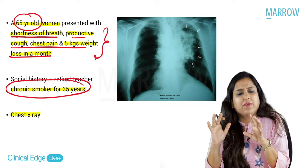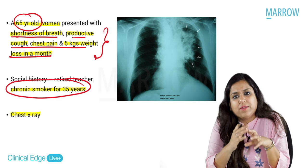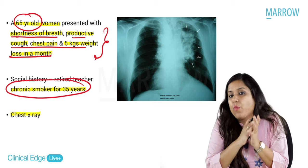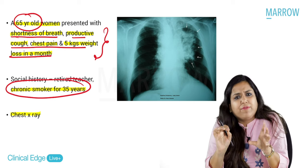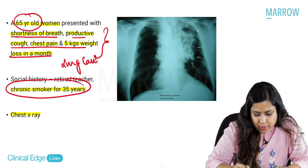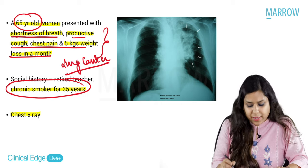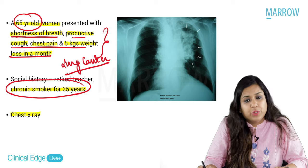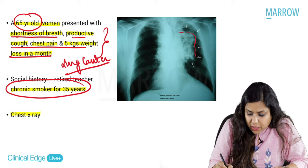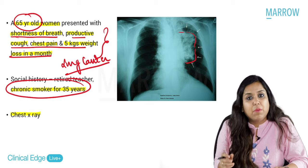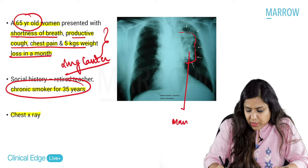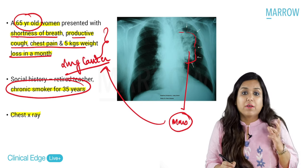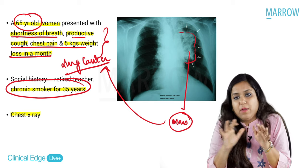Without looking at the investigations, if you get this history of a smoker patient who is elderly with significant weight loss and productive cough, what will you think of? One differential diagnosis I will definitely think of is lung cancer. Now let us see the chest X-ray. In this X-ray chest, you can see there is a lesion here in the hilum — there is a mass here. So I am thinking that my patient has got a lung cancer. What will you do in this patient? You will do a biopsy from the mass to see what it is.